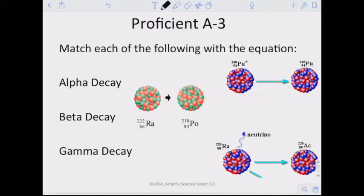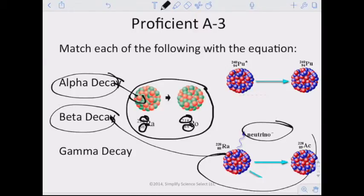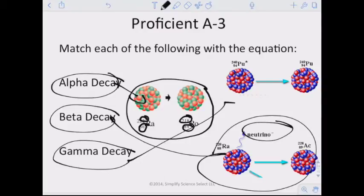Next one. It says match each of the following with the equation. Alpha decay: we're looking for that change so that we have a helium nucleus basically emitted. When we look at this one right here, we don't see the helium nucleus, but what we do see is a change in the mass. That was 218 right there, it's 222 right there, a mass of four and two protons, and that would be helium right there. Beta decay, we're going to see that it emits an anti-neutrino here and there's a slight change in mass of one neutron right there. And then gamma decay, what we see is there's no change in mass at all. The mass stays the same. It's just energy.